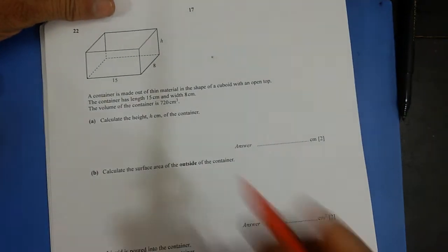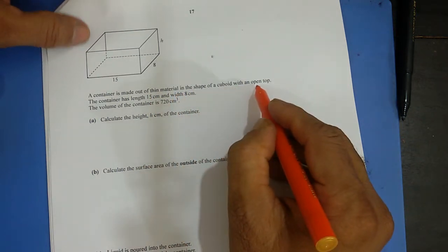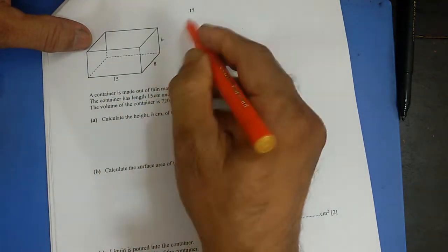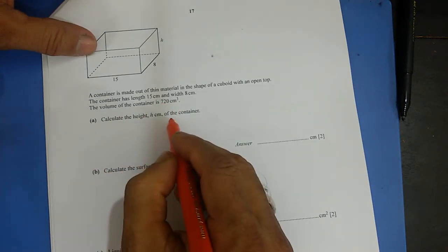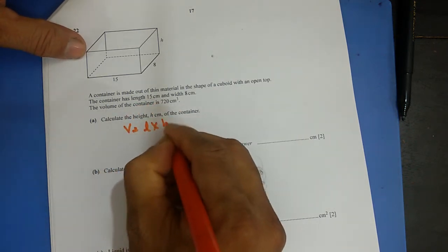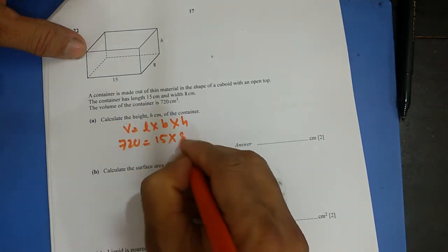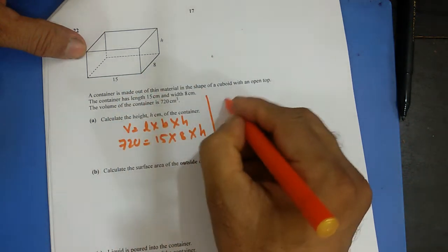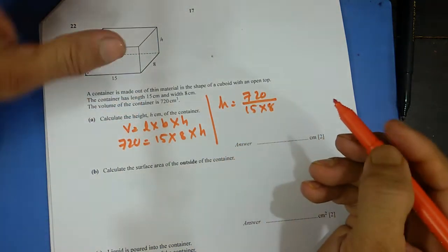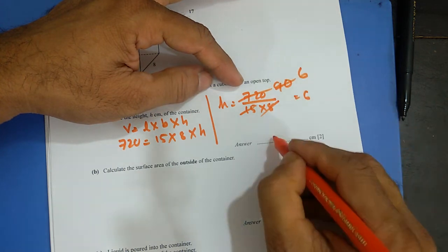Question 22: A container is made of thin material in the shape of a cuboid with an open top. The container has length 15 cm, width 8 cm, and volume 720 cm³. Calculate the height H. Volume equals length times breadth times height: 720 = 15 × 8 × H, so H = 720 ÷ 120 = 6 cm.